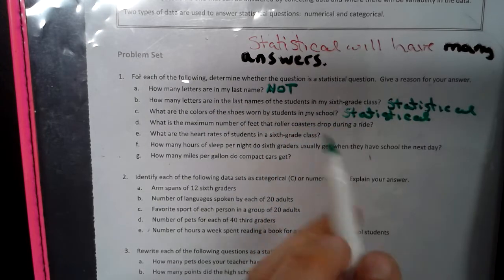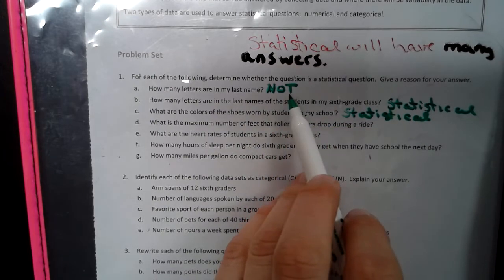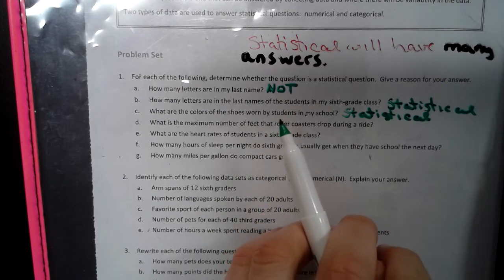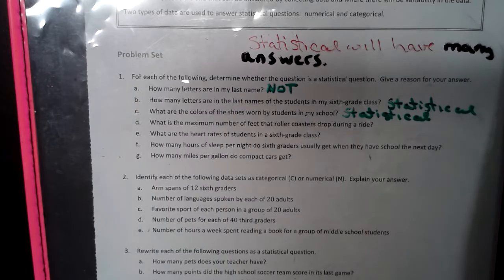So if you have one answer to the question, that means it is not statistical. But if you can have multiple answers to the question, that means it is statistical.